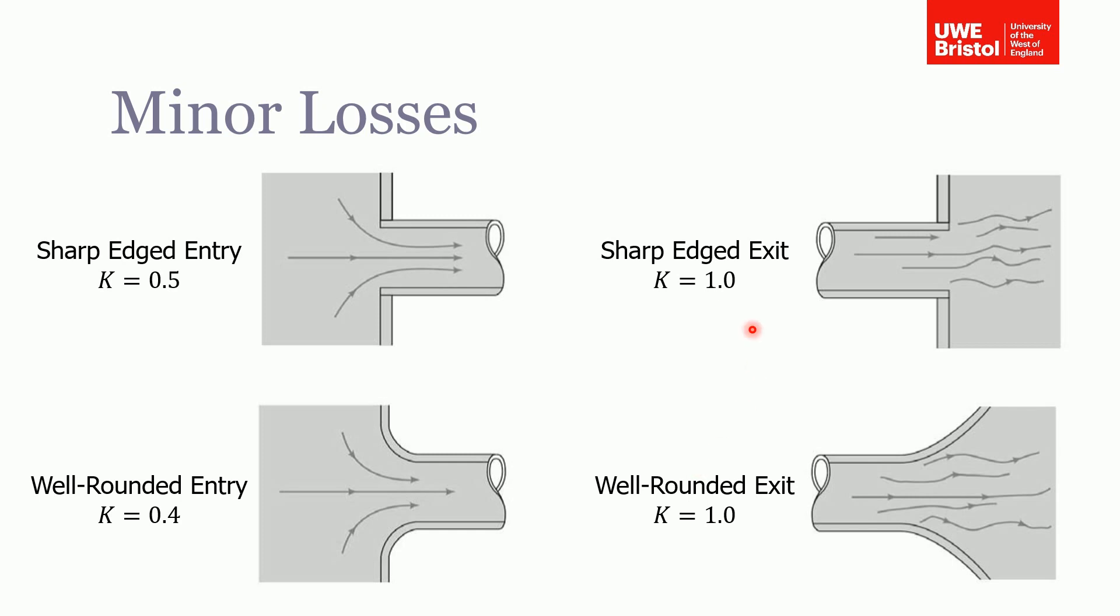So depending on what is in your system, you just need to find the corresponding pressure loss coefficient to plug into the general formula, and you also need to know the velocity in the pipe to work out the actual pressure loss for that component.